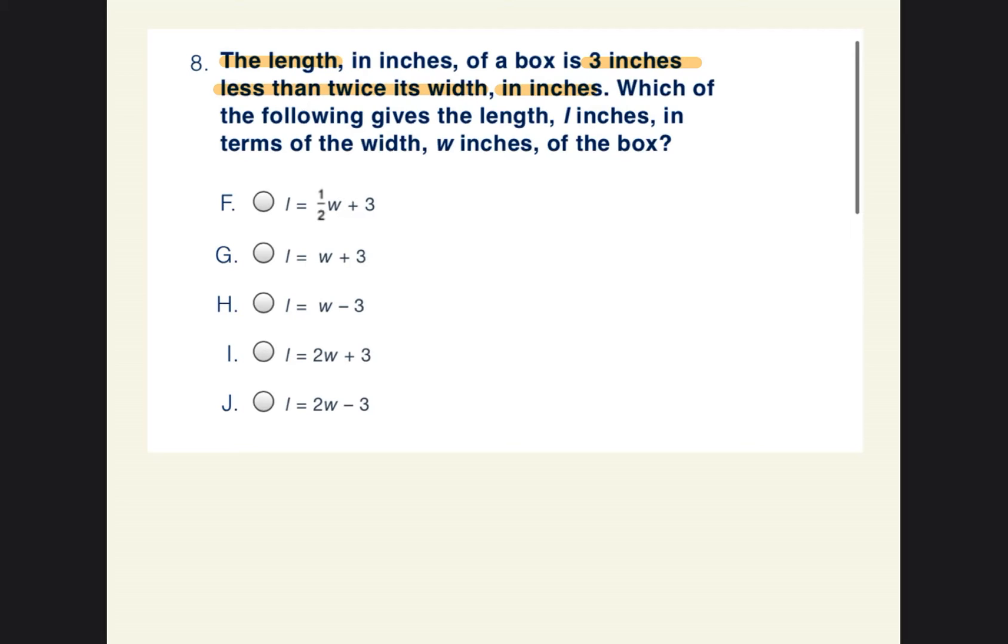It says the length in inches of a box is three inches less than twice its width in inches. Okay, so we're dealing with length and we're dealing with width. Which of the following gives the length, L inches, in terms of the width, W inches of the box? All right, so it tells us the length is three inches less than twice the width. It doesn't tell us what the width is at all. So we're just going to put X for width. And then it says the length is three inches less. So that would be subtracting three. Then twice the width. Twice means times two.